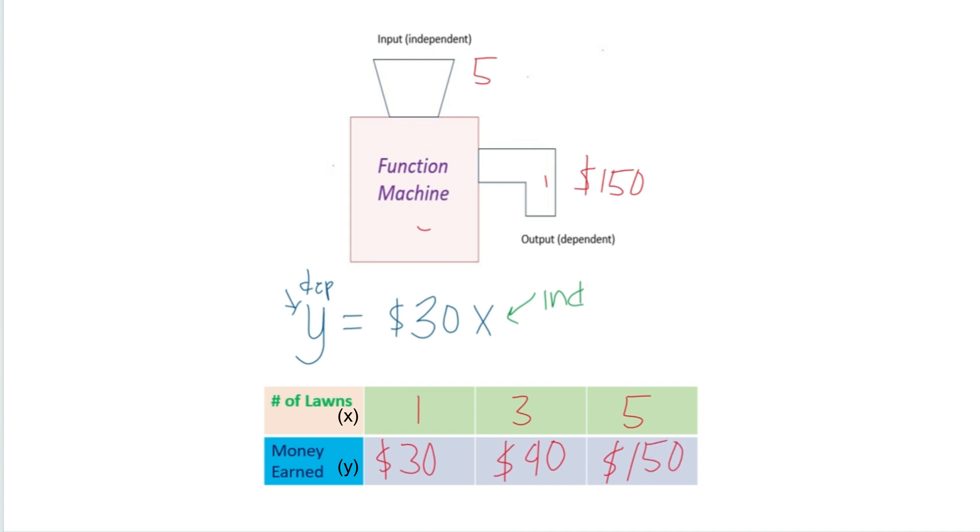Again, we're putting any number into our independent variable. And our dependent variable, y, is based on what we put into our independent variable. So that's the difference between the two.